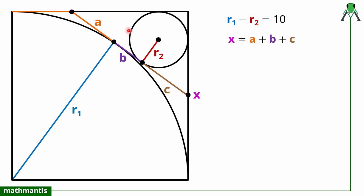Now I will apply the same property to this circle also. From this point I have drawn this tangent here and this tangent here. So this length will be a plus b, and from here to here this length will also be a plus b.